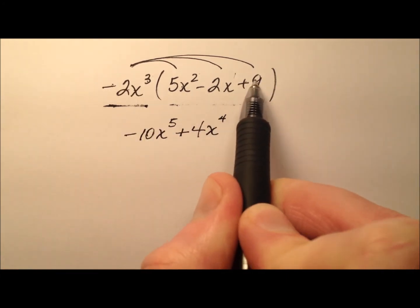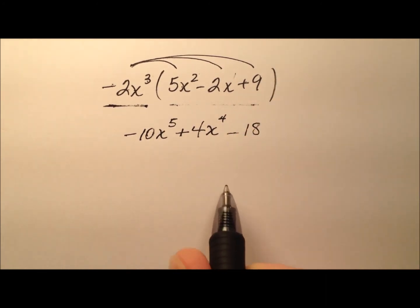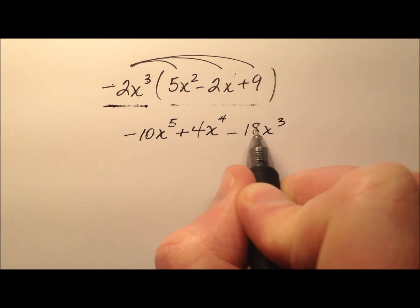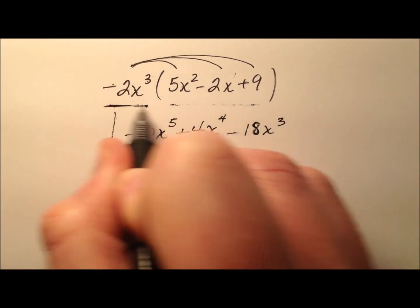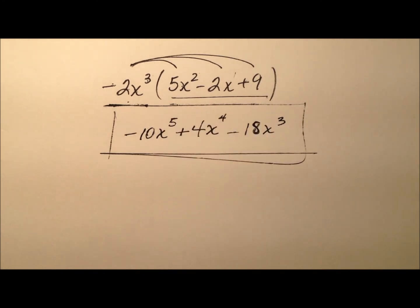And then negative 2 times positive 9 is negative 18. This 9 doesn't have any variables, so the x cubed will just come along for the ride. So here is the product when I multiply this monomial through this polynomial.